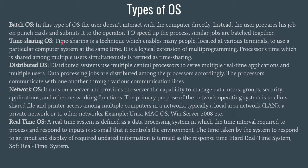The next type is Time Sharing OS. This enables many people located at various terminals to use a particular system at the same time. It is a logical extension of multiprogramming. Time sharing is essentially multitasking, which is what we use in today's world. The processor's time is divided into several slots, and those slots are provided to instructions to be completed within that time. If any instruction remains incomplete in its time slot, the waiting instructions in the queue are executed first, and then the first instruction is allocated time again.